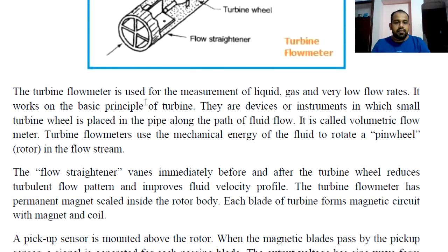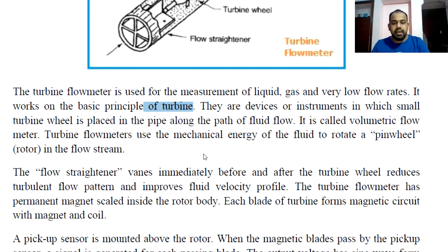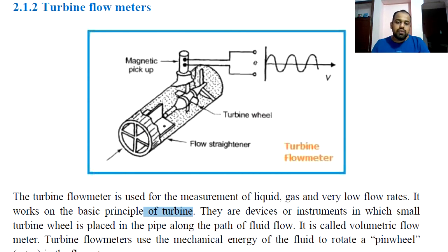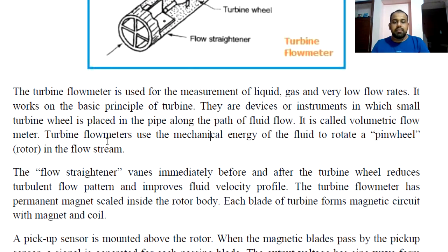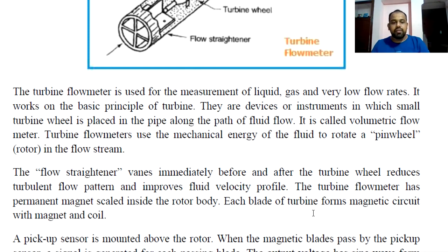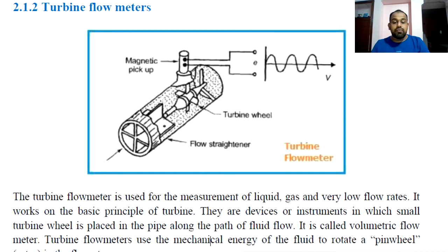The turbine flow meter is used for the measurement of liquid, gas, and very low flow rates. It works on the basic principle of a turbine — a small turbine wheel is placed in the pipeline along the path of fluid flow. It is also called the volumetric flow meter. The turbine flow meter uses the mechanical energy of the fluid to rotate a rotor or pin wheel in the flow stream.